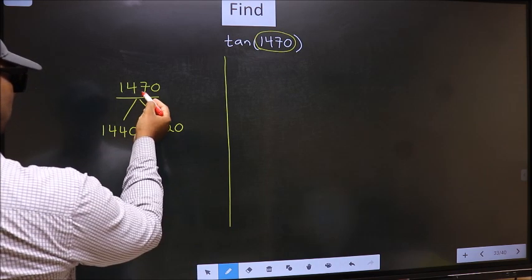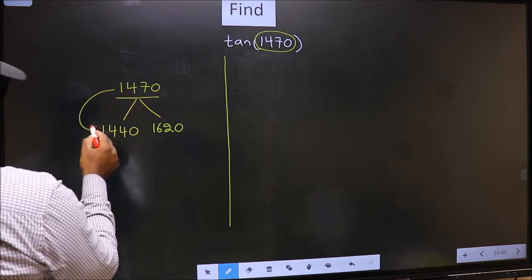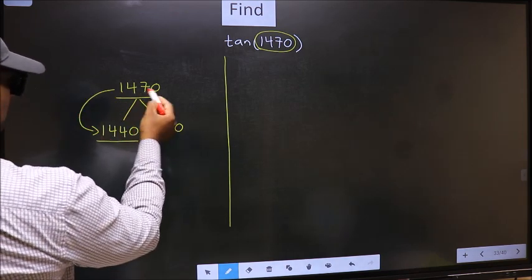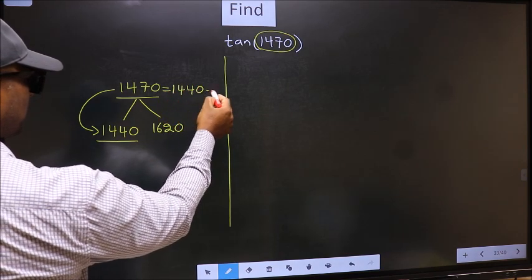Next, 1470 is close to which number? This is close to 1440. So in place of this, now we should write 1440 plus 30.